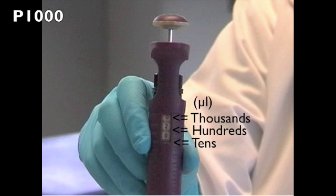On the P1000, the first number which is red represents thousands of microliters, the second number represents hundreds of microliters, and the third number represents tens of microliters.